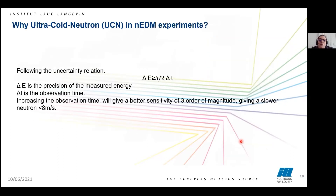Why do we need to use ultra-cold neutrons in an EDM experiment? We can answer this using the uncertainty relationship, where one term expresses the precision of the measured energy and the other is the observation time. To increase the precision of the measured energy, we should increase the observation time. Increasing the observation time gives better sensitivity of three orders of magnitude, thus favoring slower neutrons.